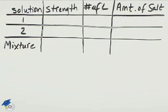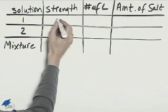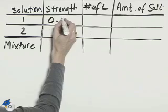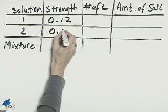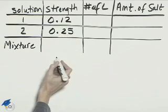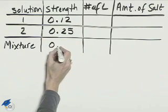The first solution is 12%, and so we'll write that as a decimal, 0.12. The second solution is 25%, and as a decimal, that's 0.25. The mixture of the two is 20%, 0.20.